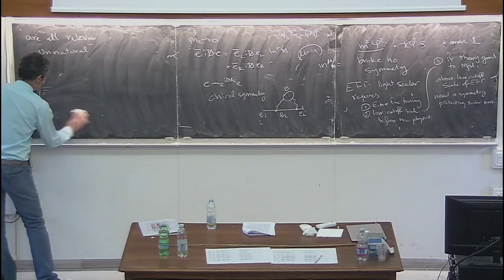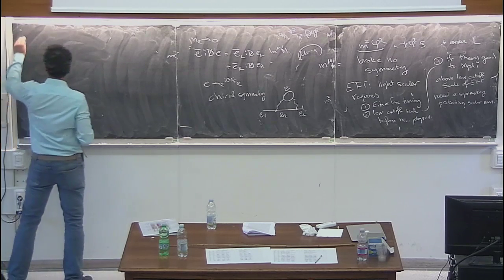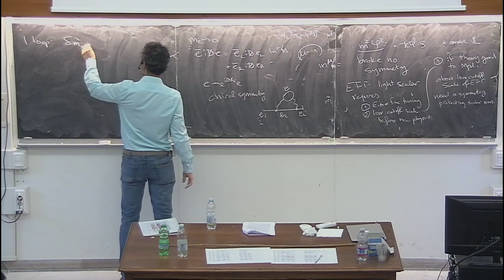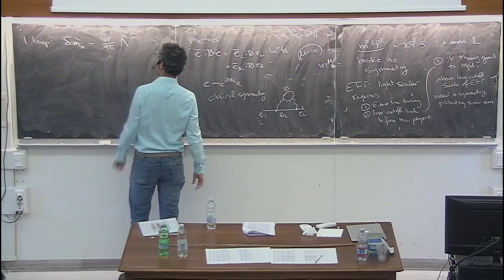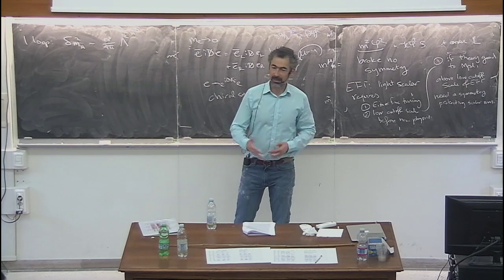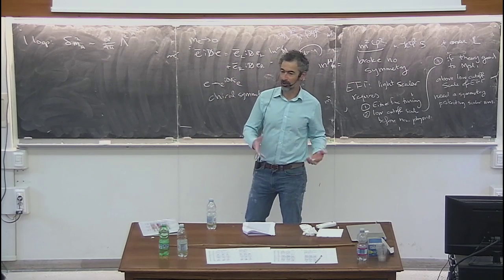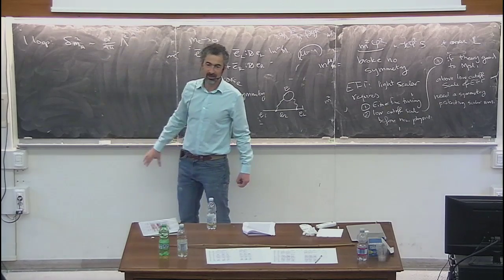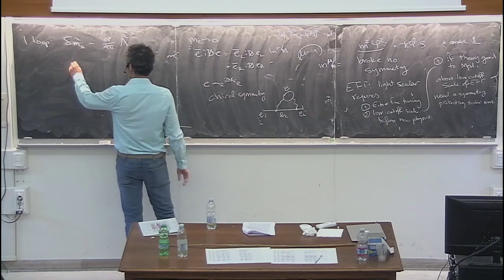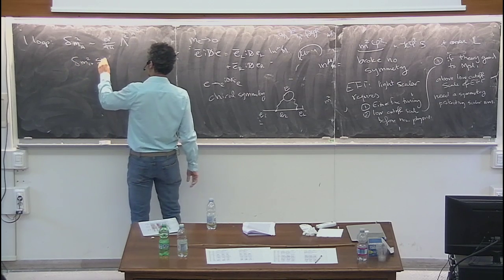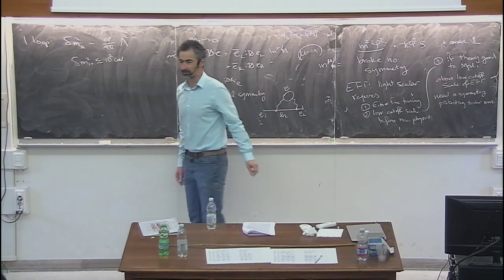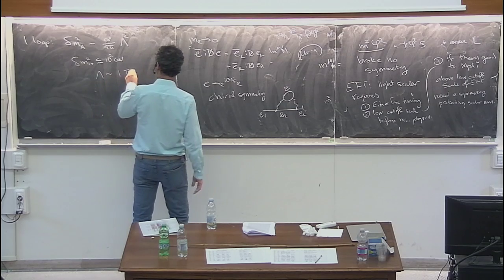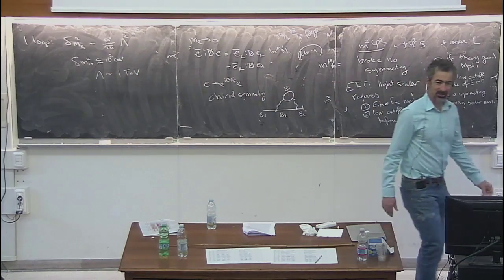The change in the Higgs mass at one loop is something like (alpha/4π) times Lambda², where alpha might be alpha_2, alpha_1, or a Yukawa coupling - some coupling squared over 4π times a relatively small number times Lambda². If you say you want delta m_Higgs² to be less than approximately (10² GeV)², so the correction isn't much larger than the mass we need, you find Lambda has to be on the order of 1 TeV. That's partly the excitement about the LHC - the hope that it's within reach of seeing this new physics.